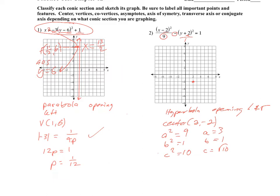We can leave it as radical 10 and estimate where it is. Since it's opening right and left, the distance from the center to the vertices is 3. So 3 to the right is one vertex and 3 to the left is the other. Vertices are at (5, −2) and (−1, −2). Going up and down b units from the center gives us the ends of the conjugate axis, and from the box we can draw our asymptotes.